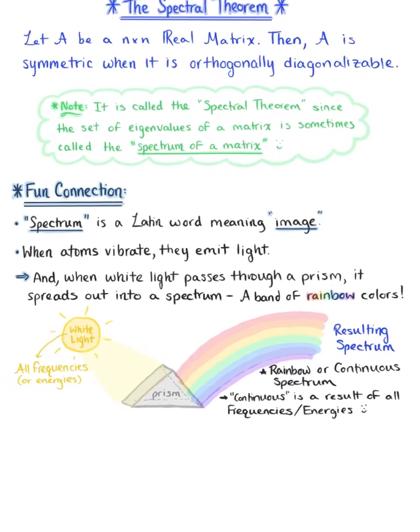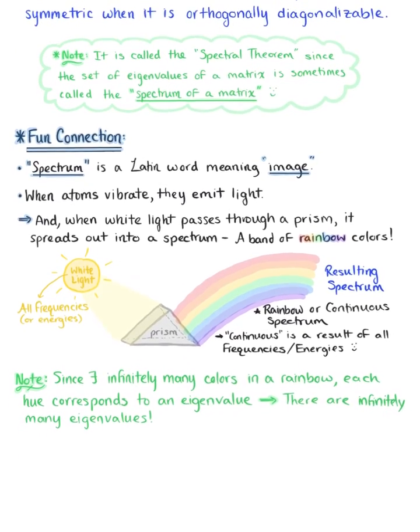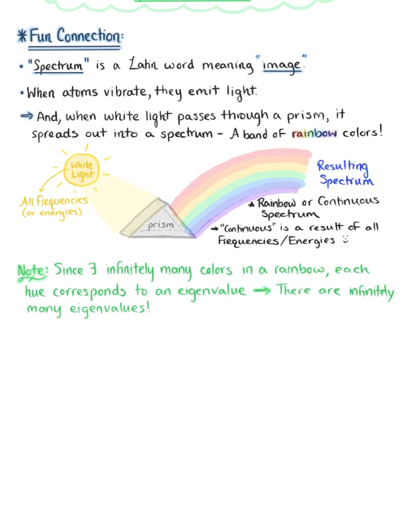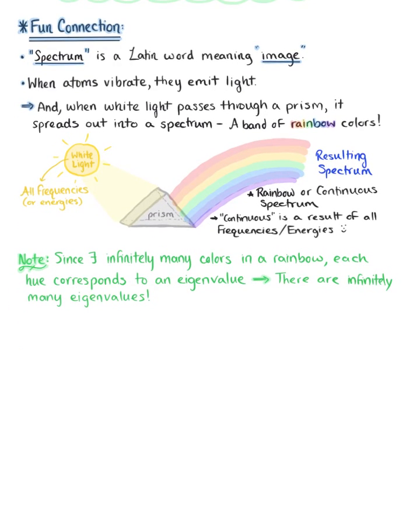Now we want to make the note that since there exists infinitely many colors in a rainbow, each hue corresponds to an eigenvalue. Or in other words, there are infinitely many eigenvalues for our resulting spectrum.